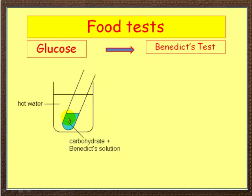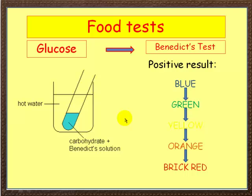Now Benedict's is blue. You can't heat this directly — you have to put it in what's called a water bath. You put your solution in there. Now if there is glucose present, the solution will change from blue to green to yellow to orange and finally to brick red. A positive result: Benedict's will go from blue to brick red if glucose is present.